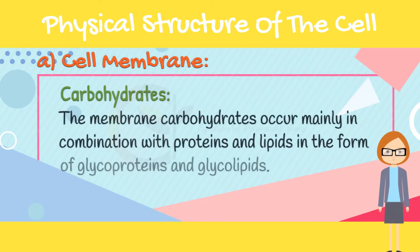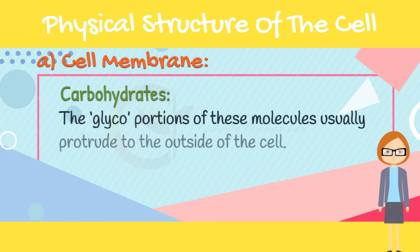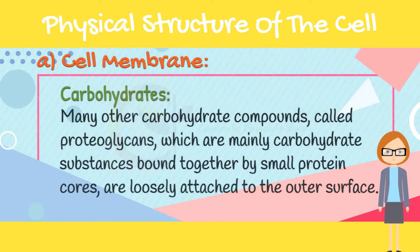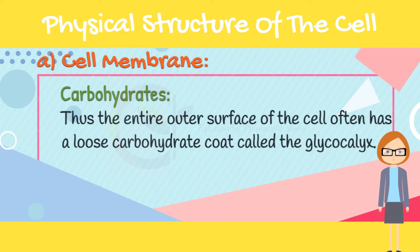The membrane carbohydrates occur mainly in combination with proteins and lipids in the form of glycoproteins and glycolipids. The glyco-portions of these molecules usually protrude to the outside of the cell. Many other carbohydrate compounds called proteoglycans, which are mainly carbohydrate substances bound together by small protein cores, are loosely attached to the outer surface. Thus the entire outer surface of the cell often has a loose carbohydrate coat called the glycocalyx.